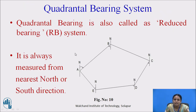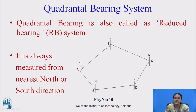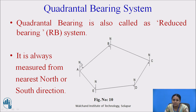Quadrantal bearing system is also called reduced bearing. In the quadrantal bearing system, the bearing of survey lines are measured with respect to the nearest north or south pole. For station A, the angle is shown with respect to the north direction; for station B, the angle is shown with respect to the south direction. So in the quadrantal bearing system, angles are measured with respect to the nearest north or south direction.